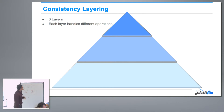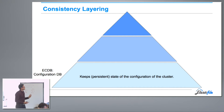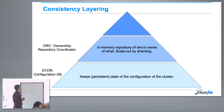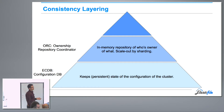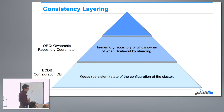We have three layers, each handling different operations. The lowest layer is what we call the ECDB — the configuration database — which basically keeps a persistent state of the configuration of the cluster. The second layer is the ORC layer, the ownership repository coordinator. It's an in-memory repository that tracks who's the owner of what, and it scales out by sharding. Because operations there are on a per-file, per-directory basis, there's no problem with sharding.